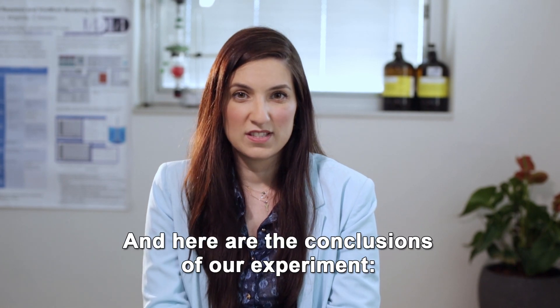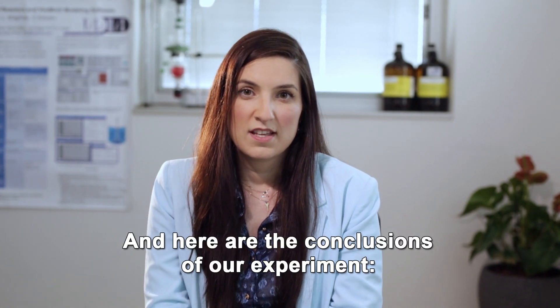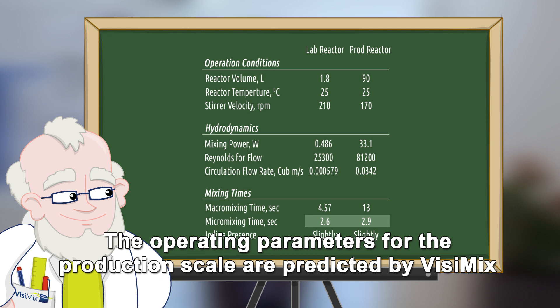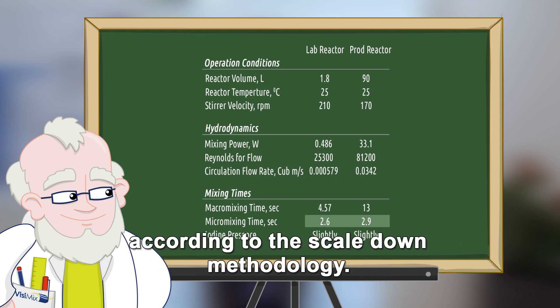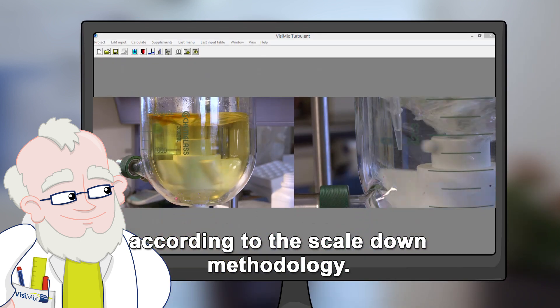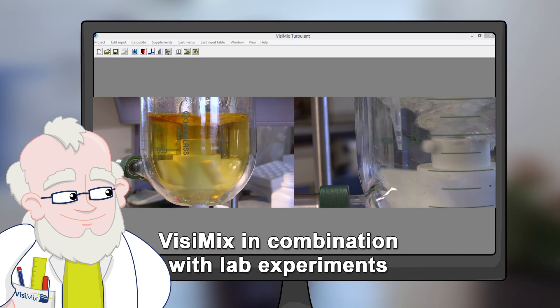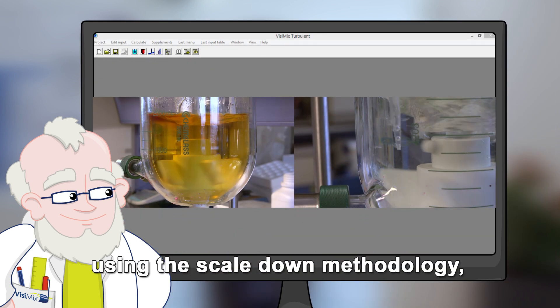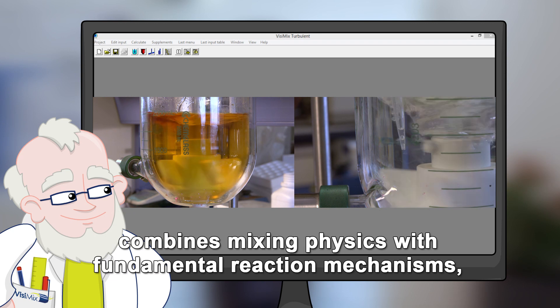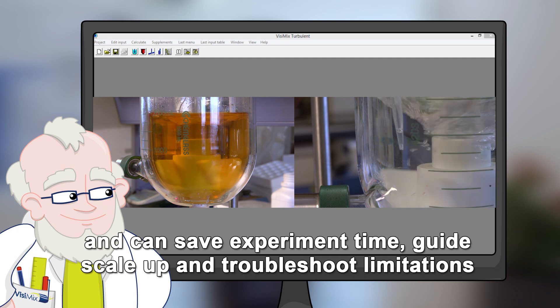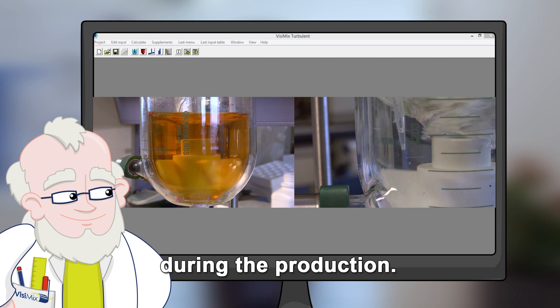And here are the conclusions of our experiments. The operation parameters for the production scale are predicted by Vizimix according to the scaled-down methodology. Vizimix, in combination with lab experiments using the scaled-down methodology, combines mixing physics with fundamental reaction mechanisms and can save experiment time, guide scale-up, and troubleshoot limitation during the production.